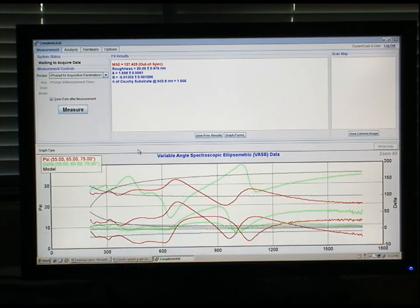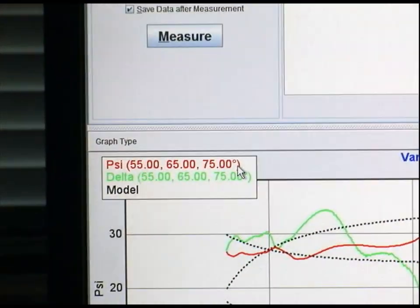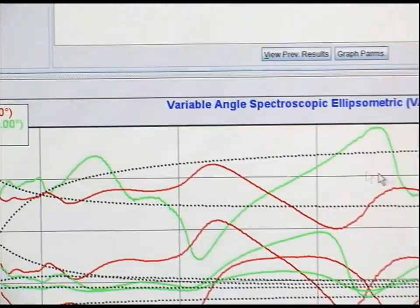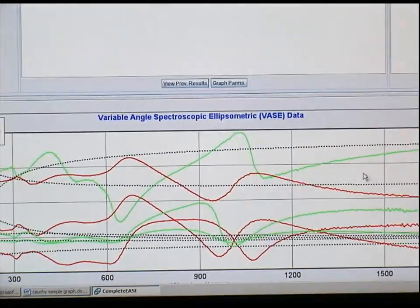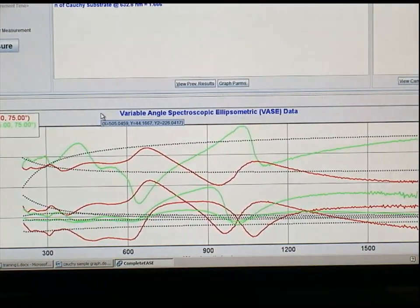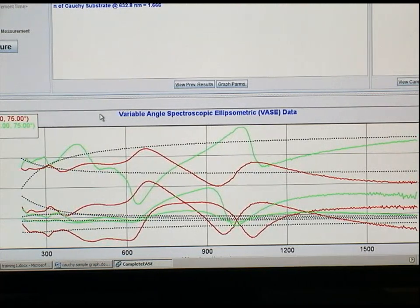Now that we've acquired data for an absorbing film on glass, we have our psi and delta data still at three angles of incidence, 55 degrees, 65 degrees, and 75 degrees shown here. As you can see, the psi and delta data appears quite differently for an absorptive film compared to just a transparent material like glass that we saw previously.